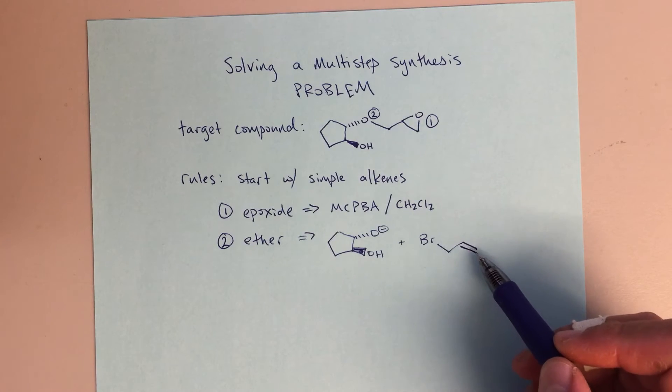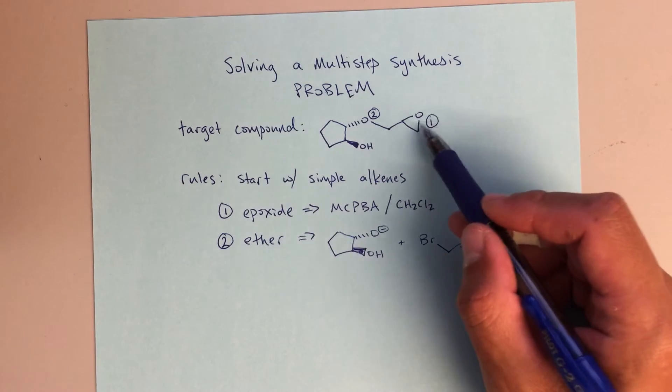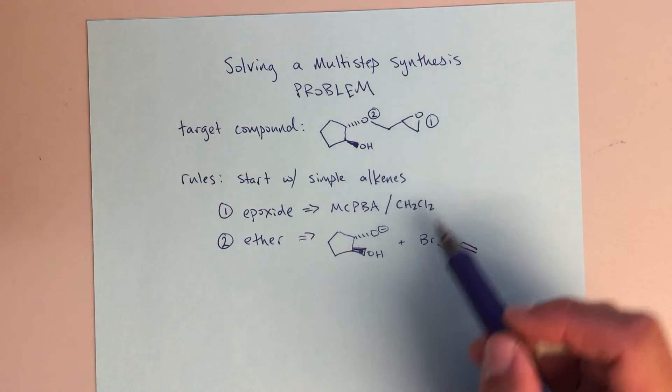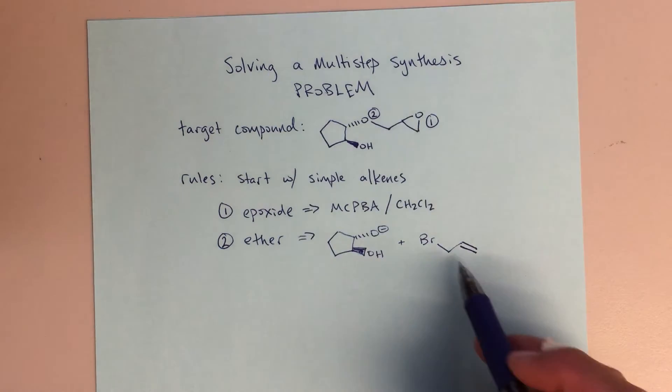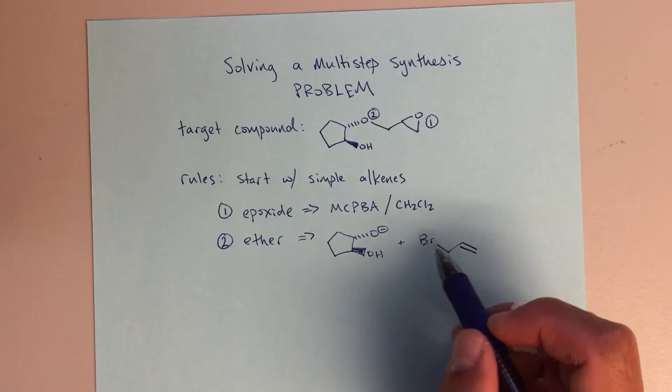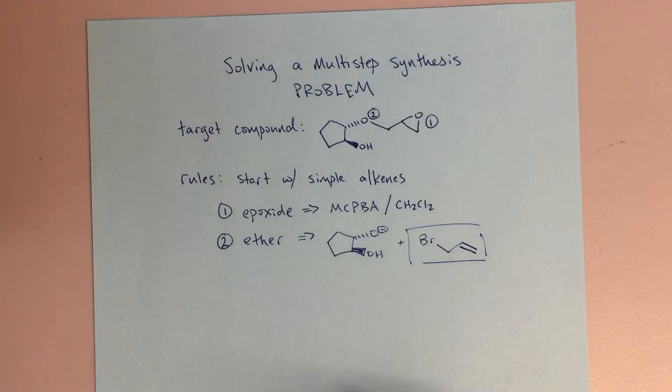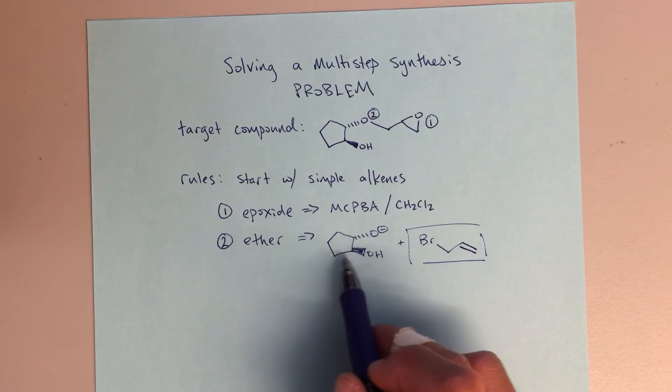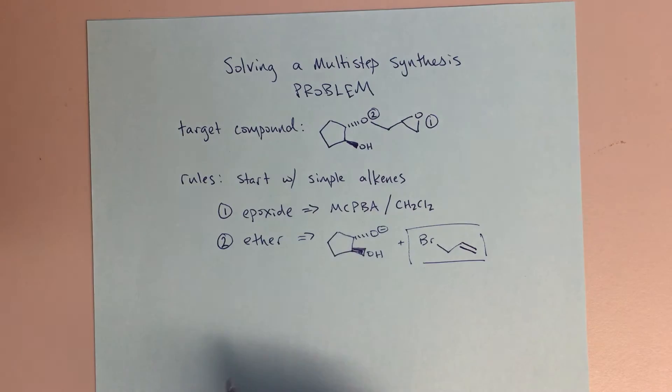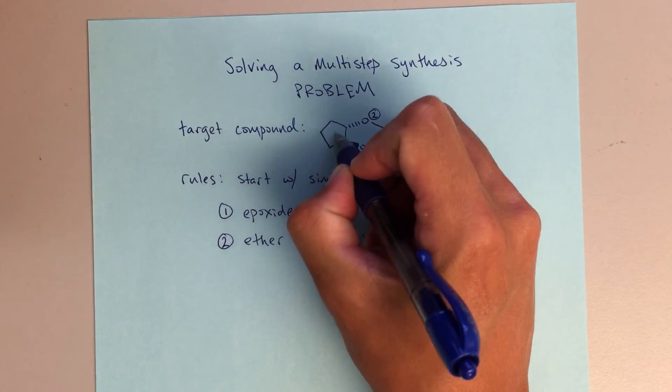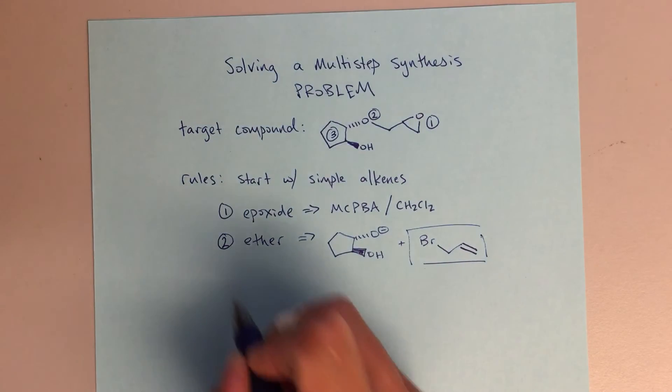Here we can imagine an SN2 attack kicking off that bromine and leaving us with our ether. Then the last real piece here, you'll notice that I showed an alkene here because I know in step one we can do an epoxidation to form that epoxide. So this would be one of my starting materials.